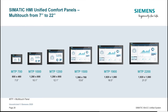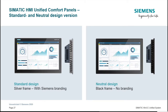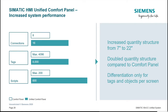Panel sizes range from the 7-inch all the way up to the 22-inch. Siemens offers two panel front varieties: the standard design with the Siemens name and the SIMATIC HMI trade name on the frame, or a neutral design with just a plain black bezel. Compared to existing comfort panels, the unified panels offer increased system performance — capable of handling double the amount of connections, almost double the amount of tags, and triple the amount of scripts — all at comparable prices.